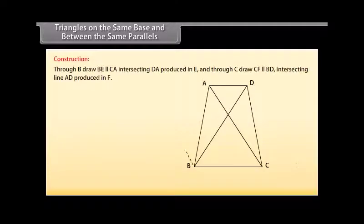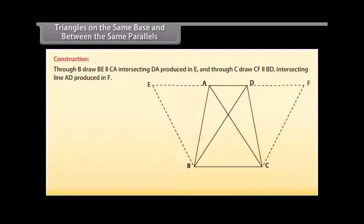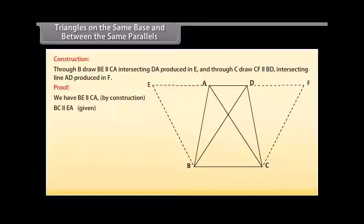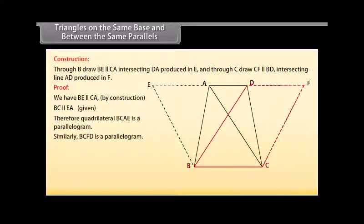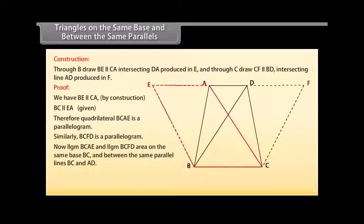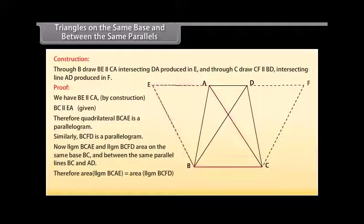Construction: Through B, draw BE parallel to CA intersecting DA produced at E; and through C, draw CF parallel to BD intersecting line AD produced at F. Proof: We have BE parallel to CA by construction, and BC parallel to EA as given. Therefore, quadrilateral BCAE is a parallelogram. Similarly, BCFD is a parallelogram. Now, parallelogram BCAE and parallelogram BCFD are on the same base BC and between the same parallel lines BC and AD. Therefore, area of parallelogram BCAE is equal to area of parallelogram BCFD. [Mark as 1.]